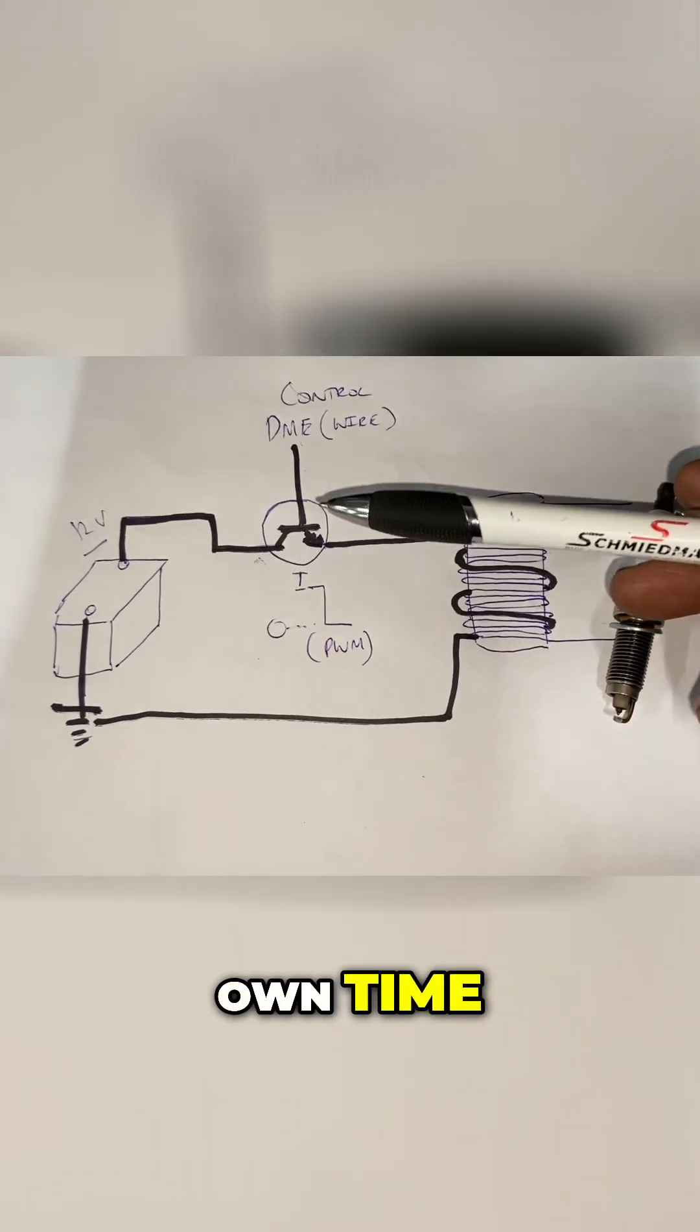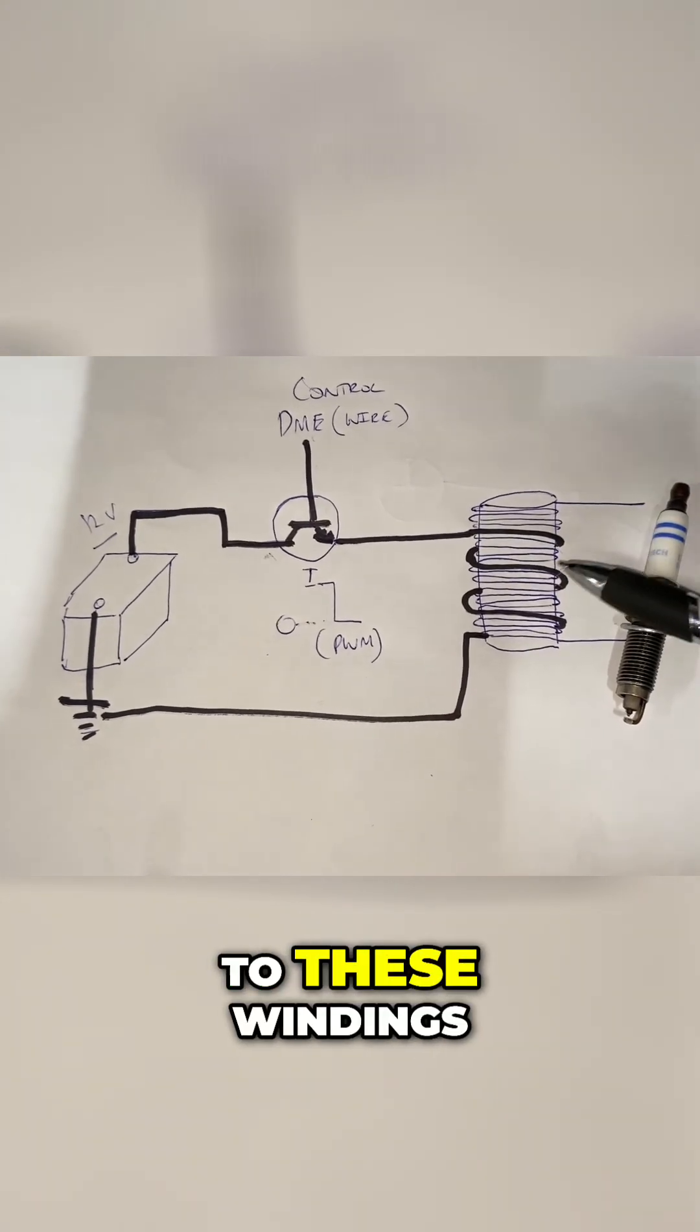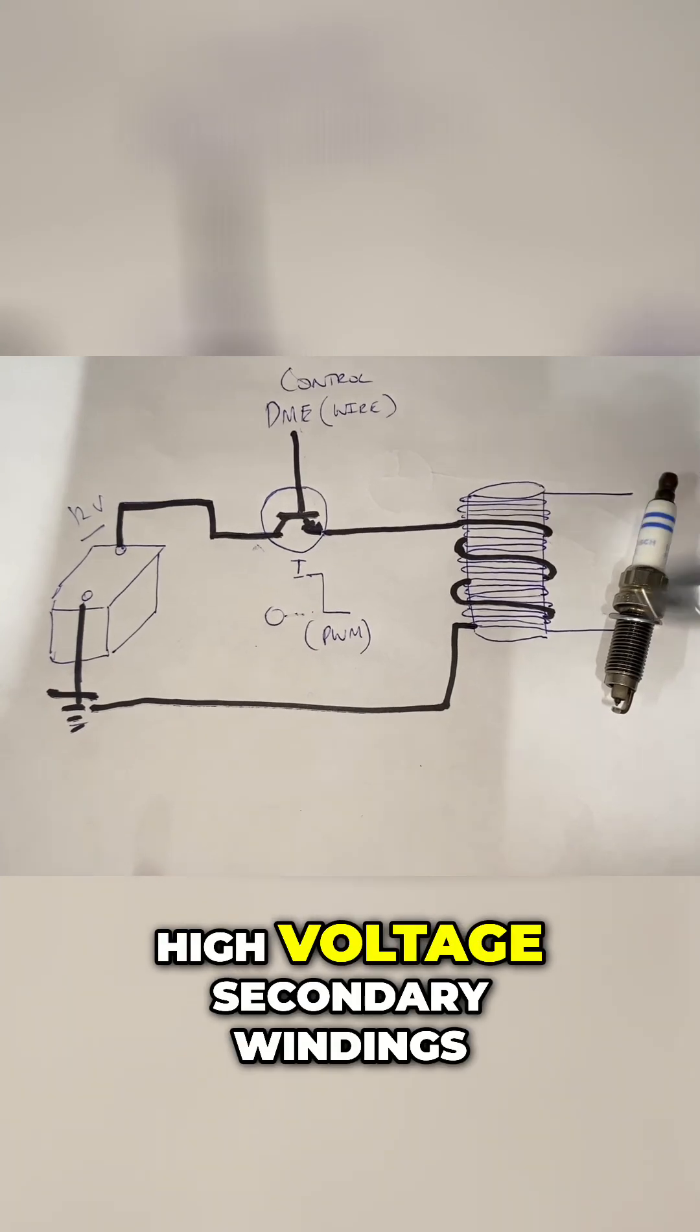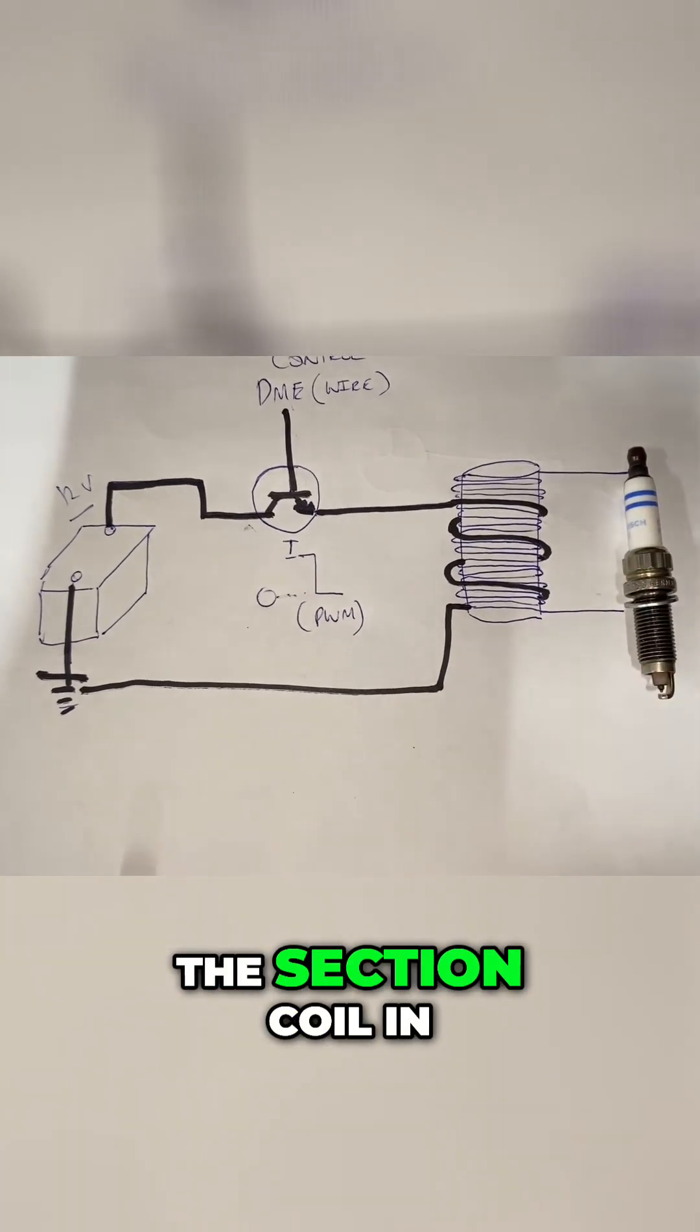This is the primary circuit and we know it's a primary circuit because it's connected to these windings. There's a lot less windings on the primary than on the high voltage secondary winds which is a lot more. We'll see that when we open the coil up, the section coil, in a minute.